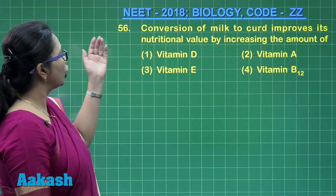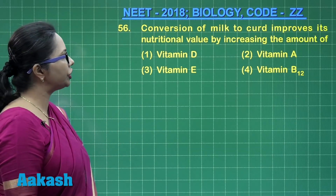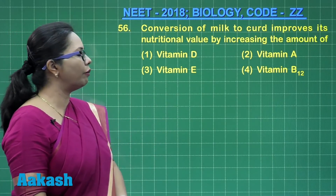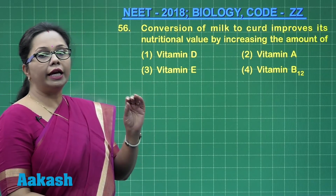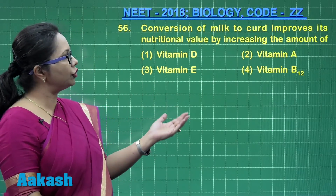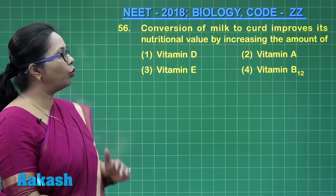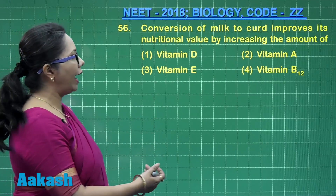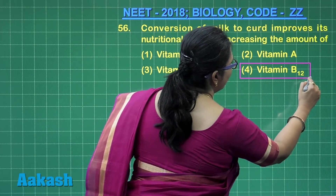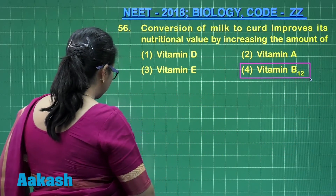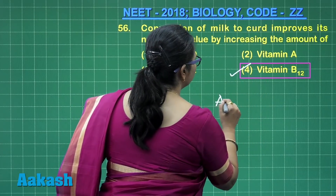Question 56: Conversion of milk to curd improves its nutritional value by increasing the amount of — when milk is converted to curd, there is bacterial activity by Lactobacillus, and these bacteria release vitamin B12, which is cyanocobalamin, a cobalt-containing vitamin. So the right answer is option 4.